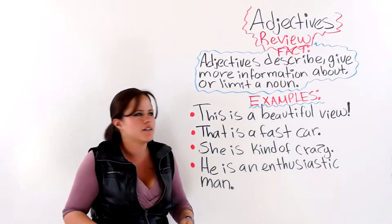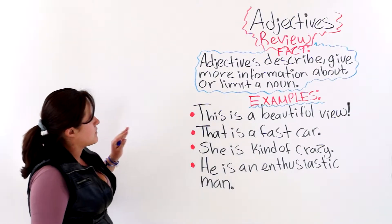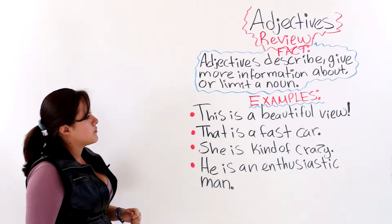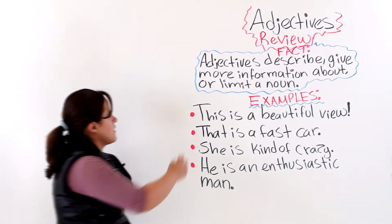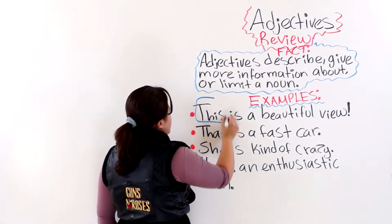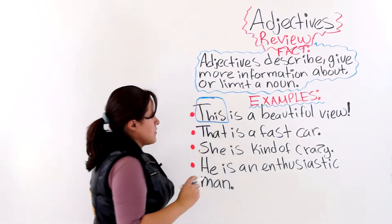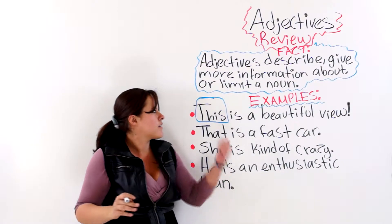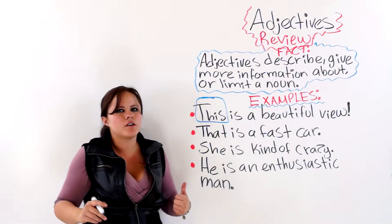The first example says, this is a beautiful view. This is an adjective that answers the question, which one? This one.